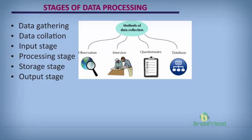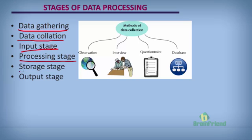There are different stages at which we process data. The first stage is data gathering. The second stage is data collation. The third is the input stage. The fourth is the processing stage. The fifth is the storage stage. And lastly, the sixth stage is the output stage.